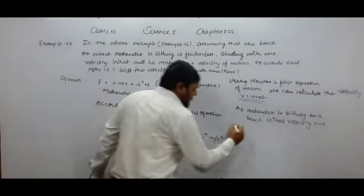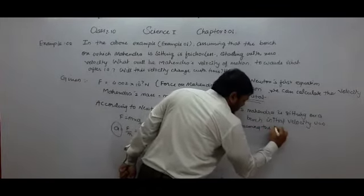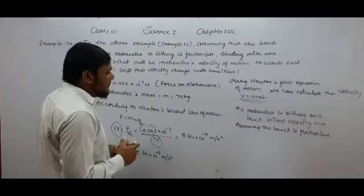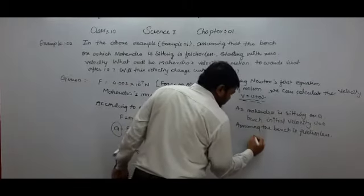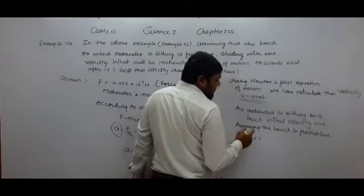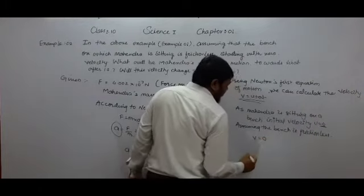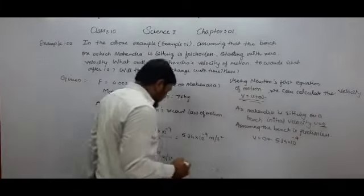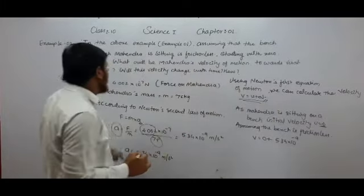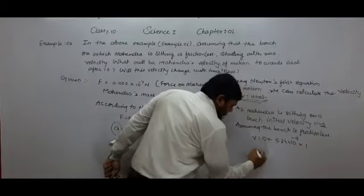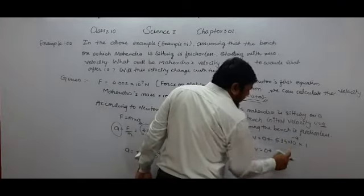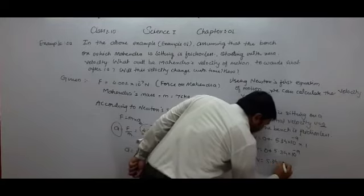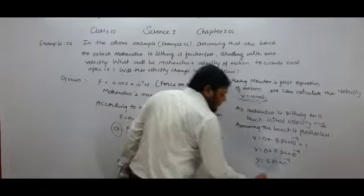Assuming the bench is frictionless, we put the values: V is equal to U plus AT, where U is 0. A is 5.34 multiplied by 10 raised to power minus 9, and T is 1 second. So V is equal to 0 plus 5.34 multiplied by 10 raised to power minus 9 multiplied by 1, that is 5.34 multiplied by 10 raised to power minus 9. The unit of velocity is meter per second.